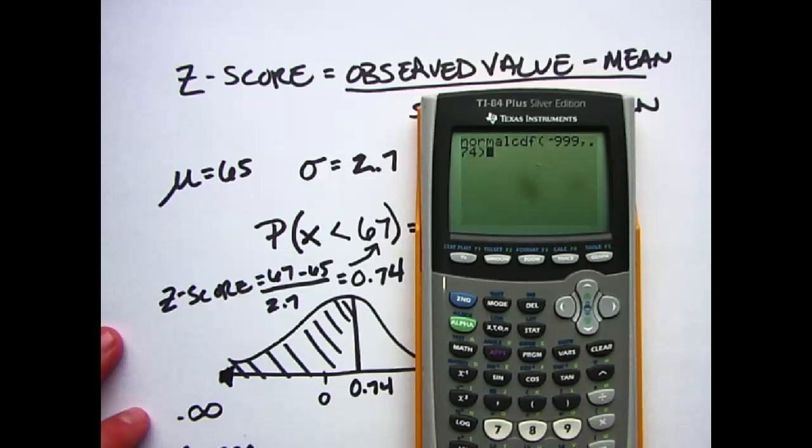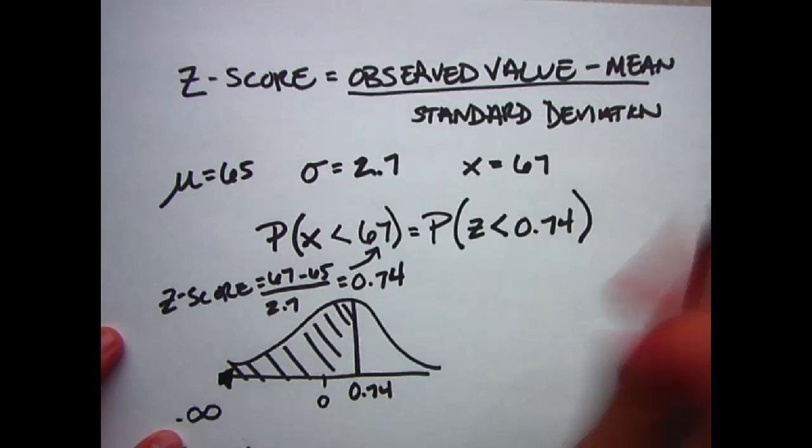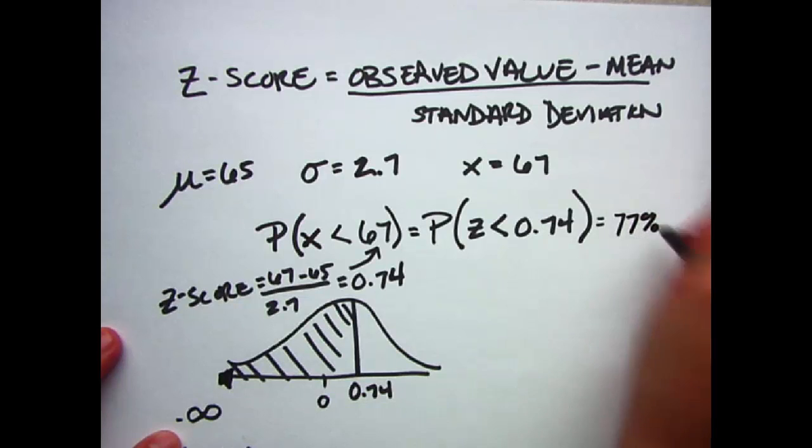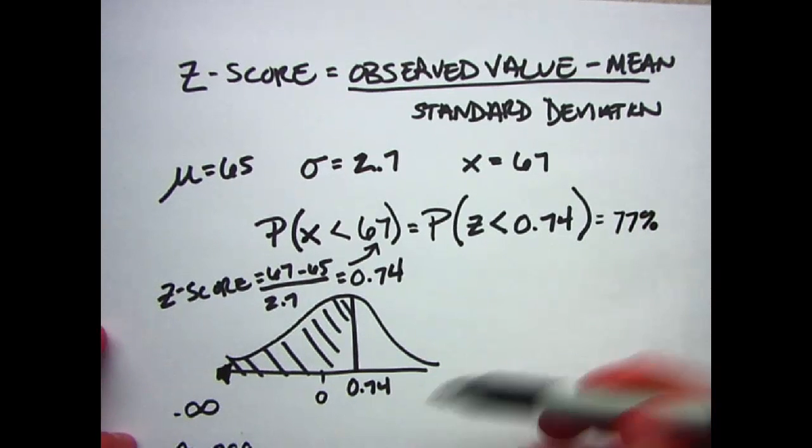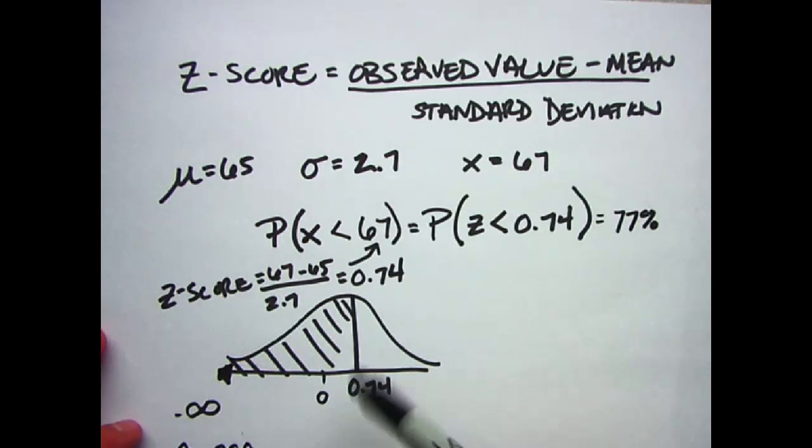This tells me this area is 0.77, or the probability of me finding a college female shorter than myself is approximately 77%. This is looking at the area below z. The next video we do will be trying to find the probability of being above z.